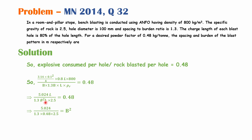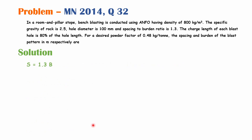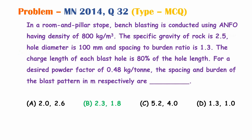After solving, the L terms cancel out and we get B² = 3.22. Taking the square root gives B ≈ 1.794 m, approximately 1.8 m. Spacing = 1.3 × 1.8 = 2.34 m, approximately 2.3 m. So the correct answer is Option B: spacing = 2.3 m and burden = 1.8 m.